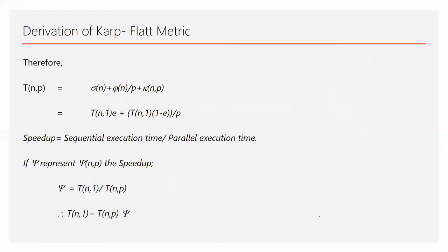The total time required for a program of size N with P processors is equal to Sigma(N) plus Phi(N) divided by P plus Kappa(N,P). Here Sigma(N) plus Kappa(N,P) is rewritten as T(N,1)·E, and Phi(N) from the previous step equals T(N,1)·(1−E), the whole thing divided by P.